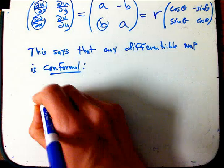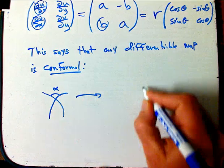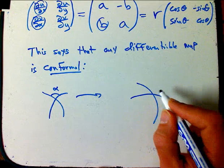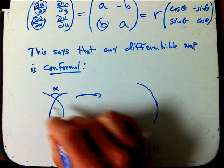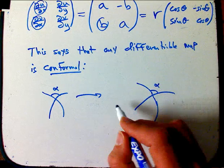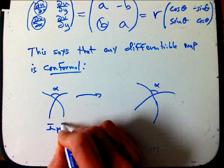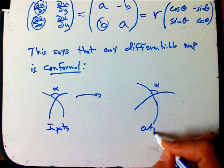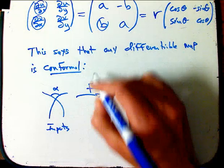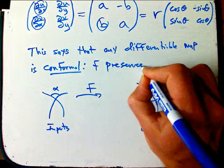It takes any two curves that meet at a certain angle alpha, it's going to take those curves to two different curves, and that angle, the angle in the outputs have to be the same. So here's the inputs, and here's the outputs, through this function, this mapping f, it has to preserve angles. F preserves angles.